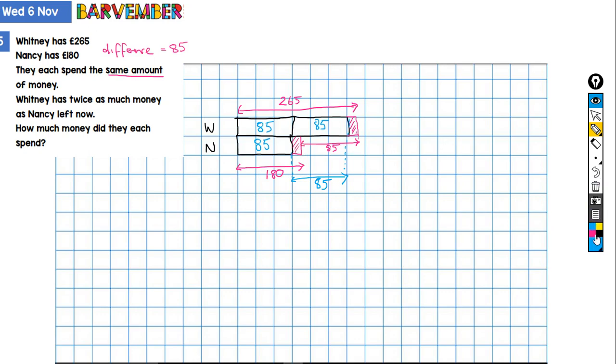Which is 95. So this is 95, and if that's 95, then that's 95. Does that make sense? So how much money did they each spend? It's 95 pounds.